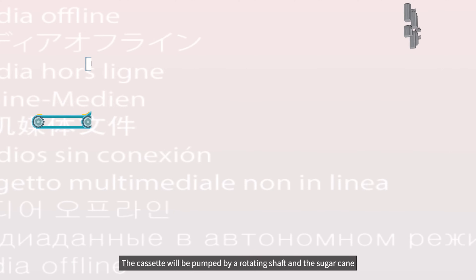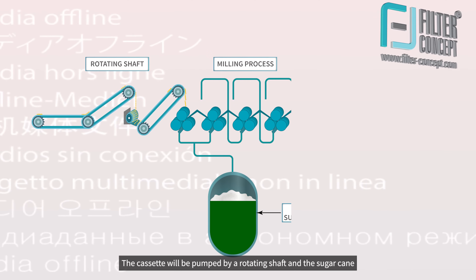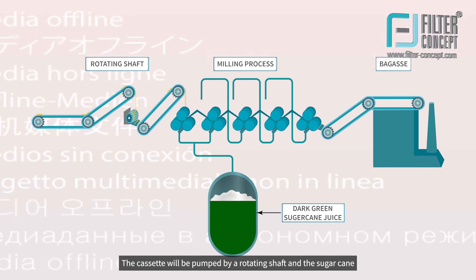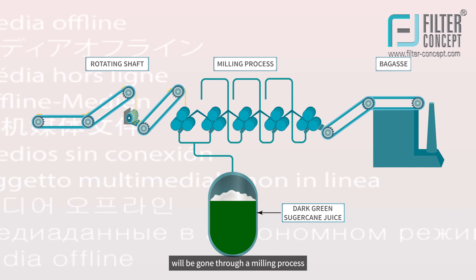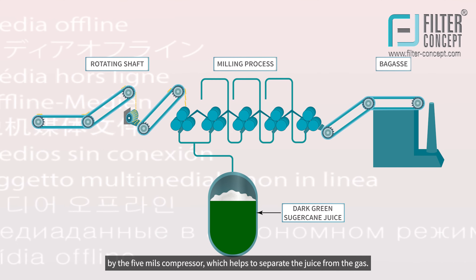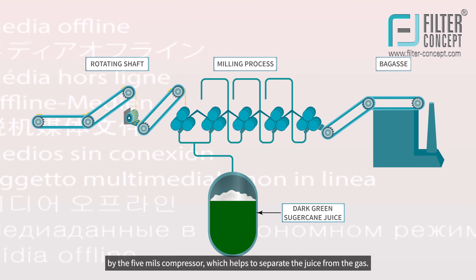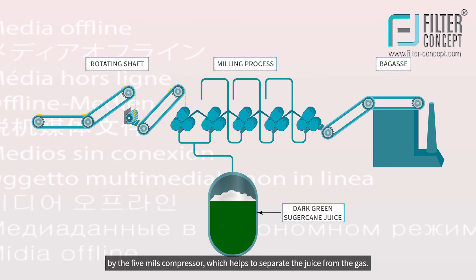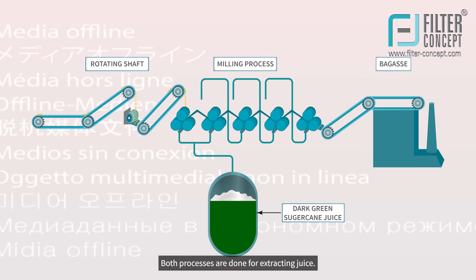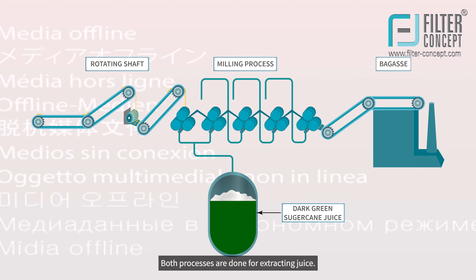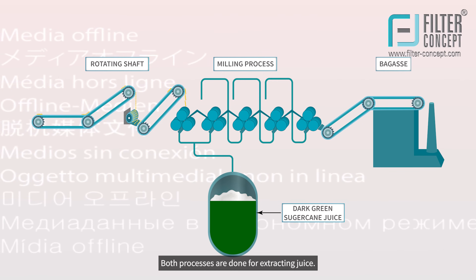The cossettes will be pumped by a rotating shaft and the sugar cane will go through a milling process by the 5-mill compressor, which helps to separate the juice from the bagasse. Both processes are done for extracting juice.